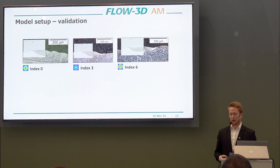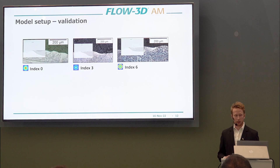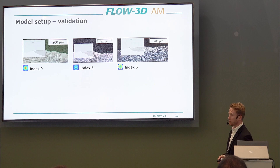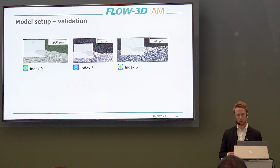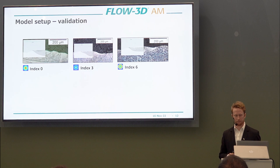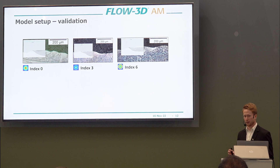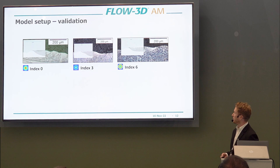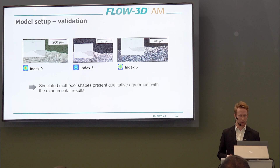Here you can see cross-sections from the experiments run by Econity, showing the melt pool track dimensions in cross-section, with smaller squares inside representing melt pools predicted by the simulation. As we move from index 0 to index 6 — shifting more energy to the outer ring — the melt pool becomes shallower and wider, and that trend is captured by the simulation, which gives more confidence in the model outcome.